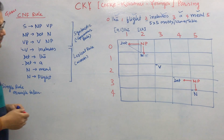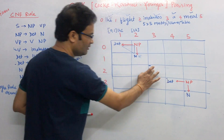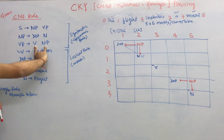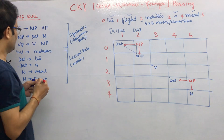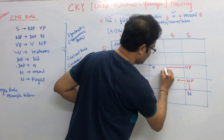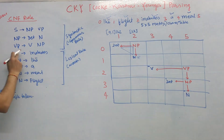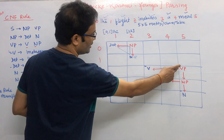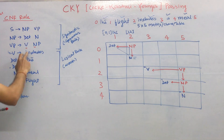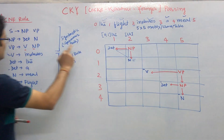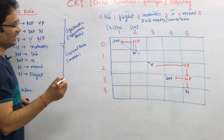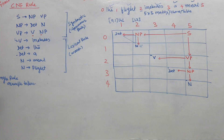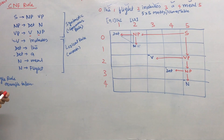Now check: is there any rule for noun phrase and verb? Yes — verb and noun phrase gives us verb phrase. So we put VP at (2,5), which covers verb at (2,3) and NP at (3,5). Now check for verb phrase and noun: no match. But we have verb phrase and noun phrase — yes, noun phrase + verb phrase gives us S. So we put S at (0,5). It is perfectly working. This is how we do CKY parsing.